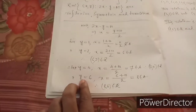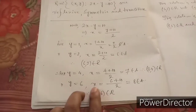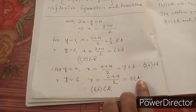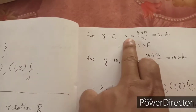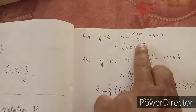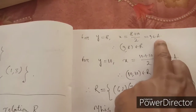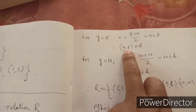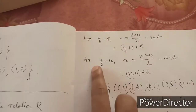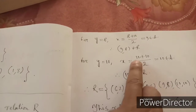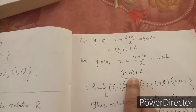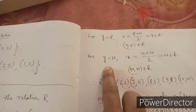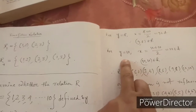For y = 6: x = (6 + 10) / 2 = 8, so (8, 6) belongs to R. For y = 8: x = (8 + 10) / 2 = 9, so (9, 8) belongs to R. For y = 10: x = (10 + 10) / 2 = 10, so (10, 10) belongs to R. We cannot take y beyond 10 since A = {1, ..., 10}.